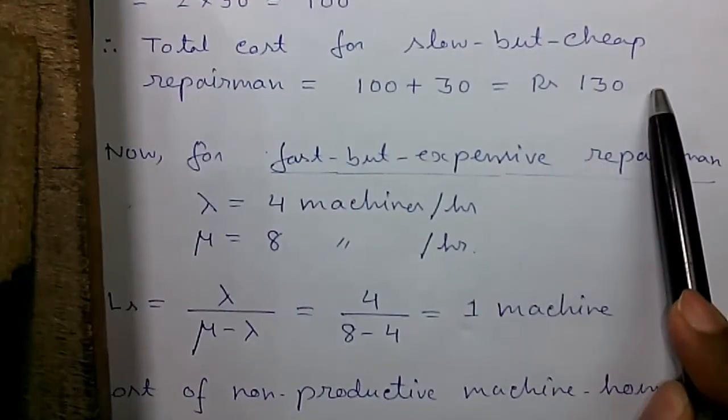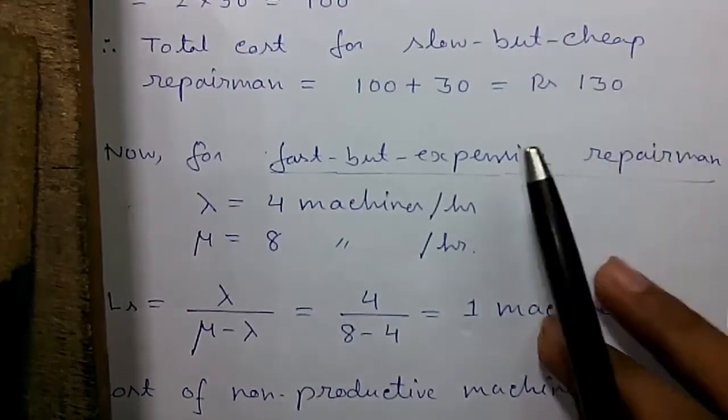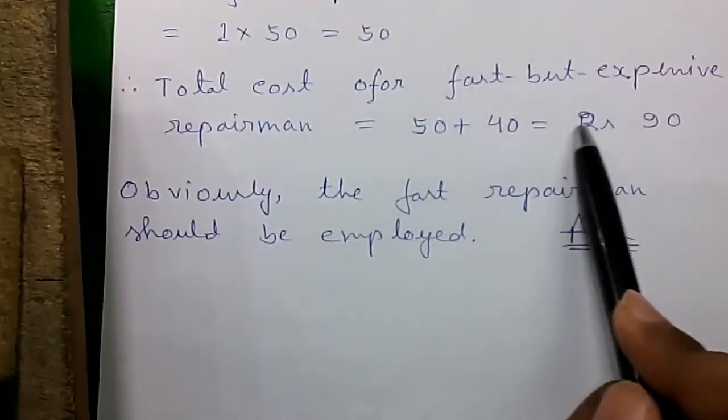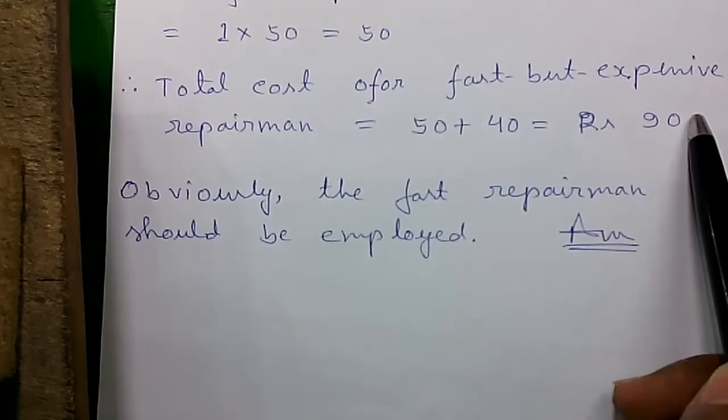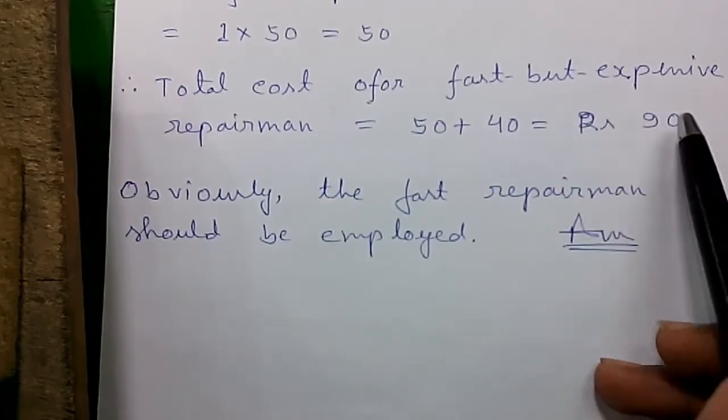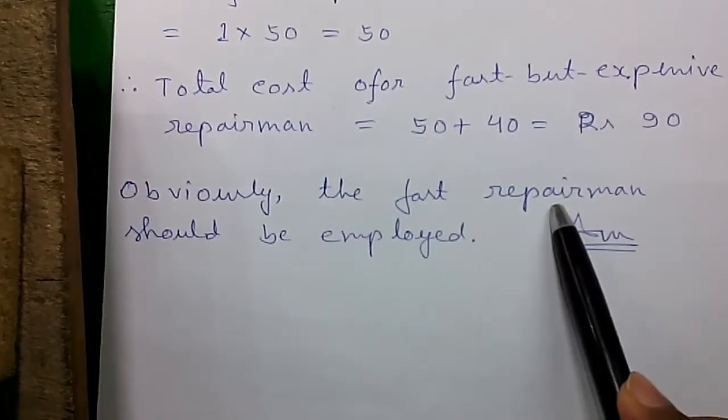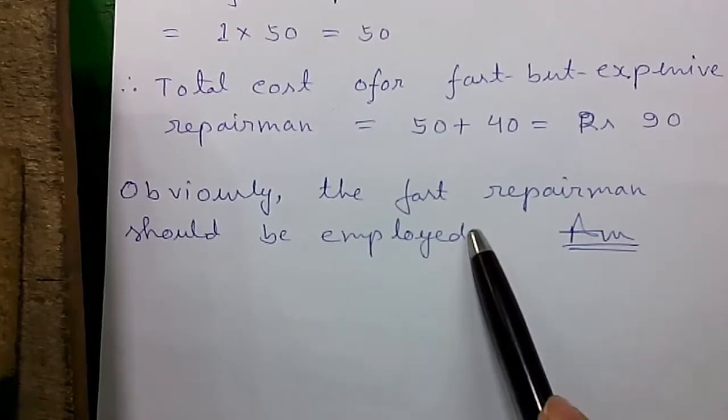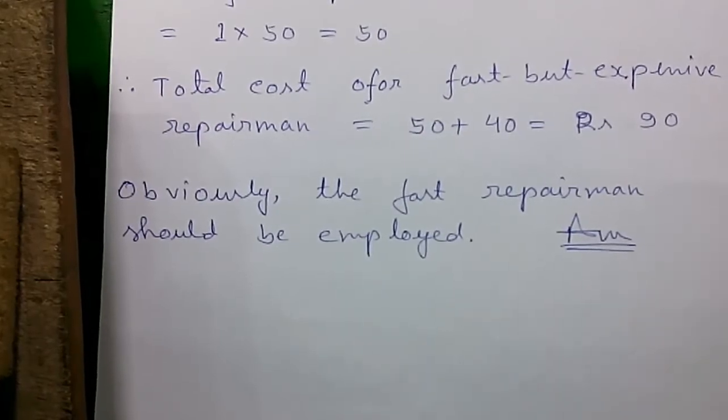So for slow repairmen the total cost is 130 and for fast repairmen the total cost is 90 which is much lesser. So obviously the fast repairmen should be employed by the factory owner is our required answer.